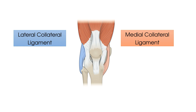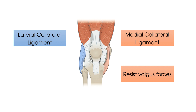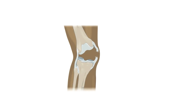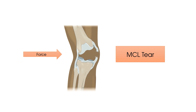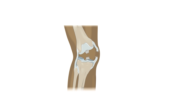The major role of the MCL is to resist valgus stresses or forces to the knee, whilst the major role of the LCL is to resist varus stresses or forces to the knee. These ligaments are commonly injured when there is a sideways force impacting from the opposite side of the knee. For example, the medial collateral ligament is often injured when there is an impact of force from the lateral side. It is important to also note that the MCL is often injured as part of twisting mechanisms that also influence the ACL.